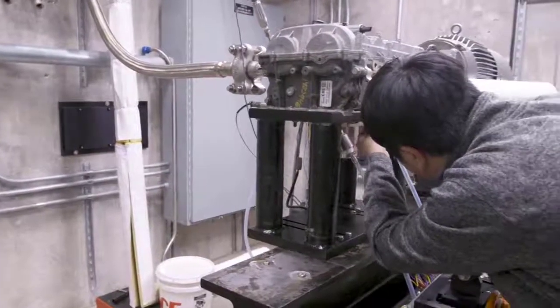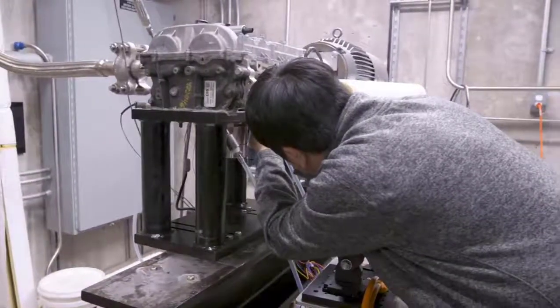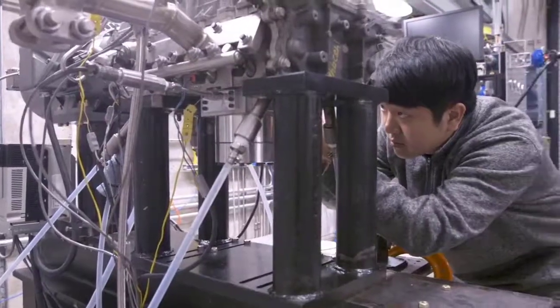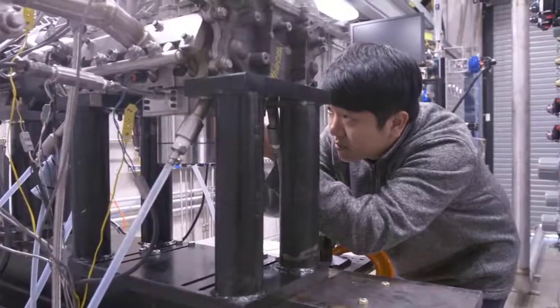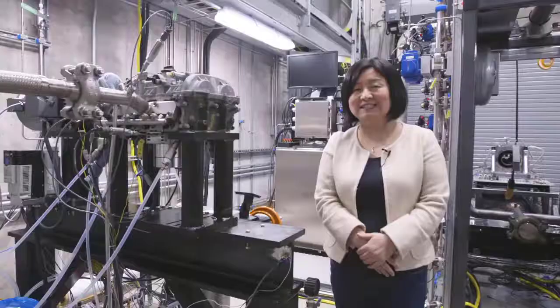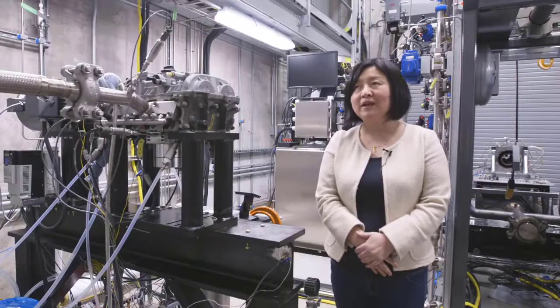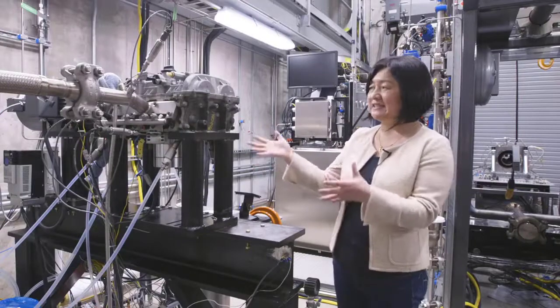This is a GM four-cylinder, two-liter gasoline engine. We have modified it to include optical access and instrumentation. So, with the heated air and this experiment, we have been examining the ignition mechanisms of pre-chamber.